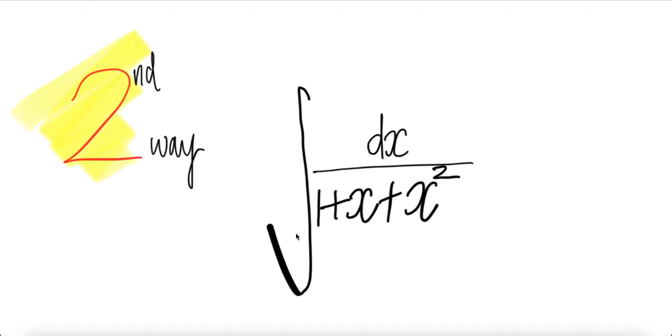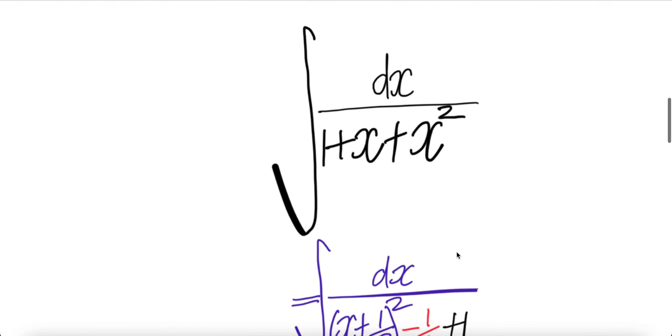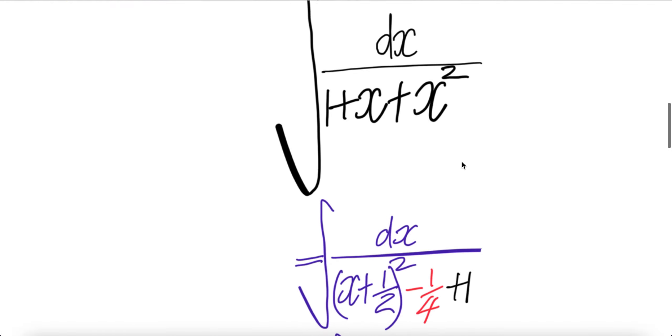Let us look at a second way to get the integral 1 over 1 plus x plus x square. Let us complete the square.